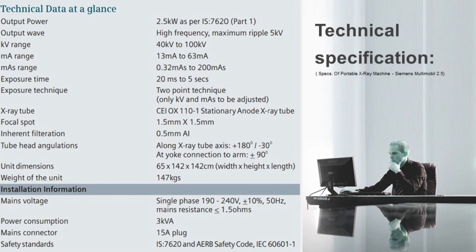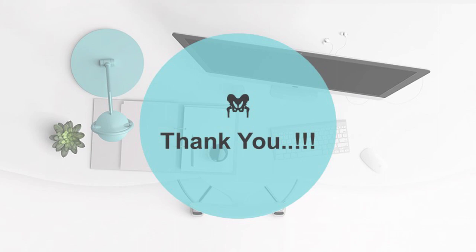Let's look at the technical specifications of a portable X-ray machine, the Siemens Multimobile 2.5. It has an output power of 2.5 kW, an output wave of high frequency and a maximum ripple of 5 kV. The kV range is from 40 kV to 100 kV and the mA range is from 13 mA to 63 mA. The exposure time is from 20 ms to 5 seconds using a 2-point exposure technique. The focal spot is 1.5 mm x 1.5 mm, basic unit dimensions are 65 x 142 x 142 cm, and the total unit weight is 147 kg. So, though X-rays are not 100% safe, they are very useful for diagnosis if used in a safe and controlled environment.